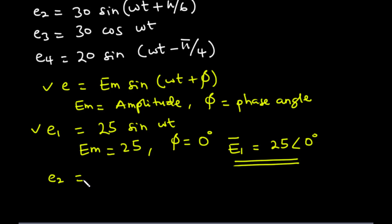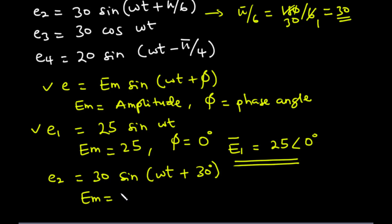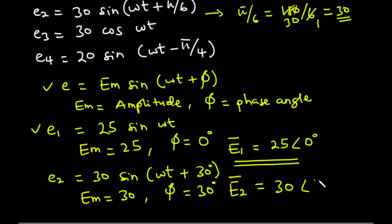Now for E2, we have 30 sine omega t plus pi over 6. Now pi over 6 is equal to 180 over 6, which equals 30 degrees. So that is omega t plus 30 degrees. So E2 bar, which is the phasor representation of E2, is equal to 30 angle 30 degrees.